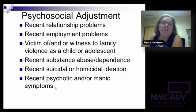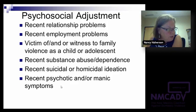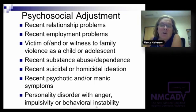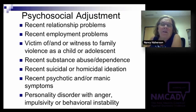The third group is the spousal assault history. We're looking at the relationship this person has had with intimate partners. Items include past physical assault, and past sexual assault or sexual jealousy. That sexual jealousy — total obsession, focus, and control — is a piece that's a little harder to assess sometimes, but really critical.